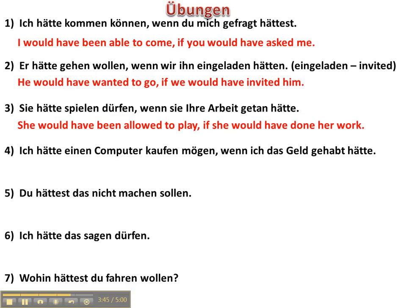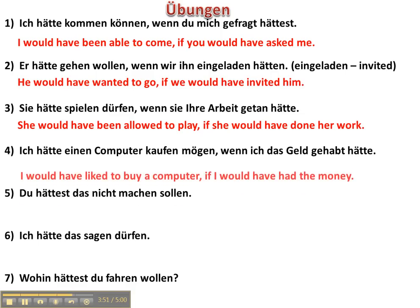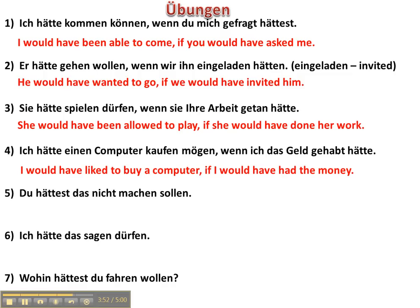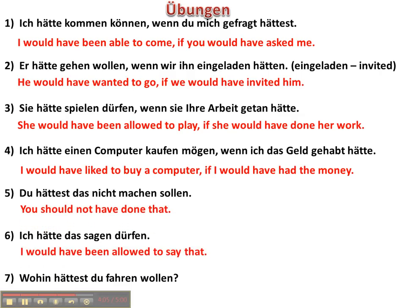Nummer vier: 'Ich hätte einen Computer kaufen mögen, wenn ich das Geld gehabt hätte' means 'I would have liked to buy a computer, if I would have had the money.' 'Du hättest das nicht machen sollen' means 'You should not have done that.' Nummer sechs: 'Ich hätte das sagen dürfen' means 'I would have been allowed to say that.'